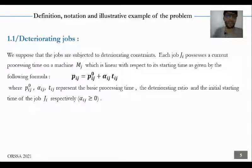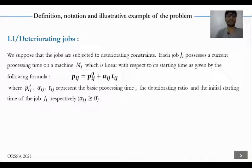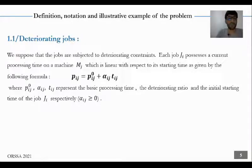We present on this slide the deteriorating jobs. We suppose that all jobs are subjected to deteriorating constraints. Each job J_i possesses a current processing time on a machine M_j which is linear with respect to its starting time, as given by the following formula. Where these numbers represent the baseline processing time, the deteriorating rate ratio, and the initial starting time of job J_i, respectively. We suppose that the ratios are non-negative.